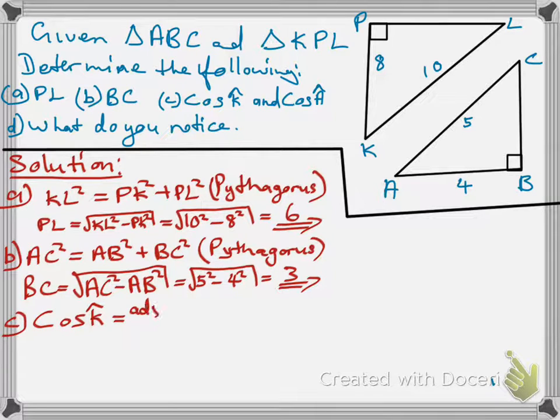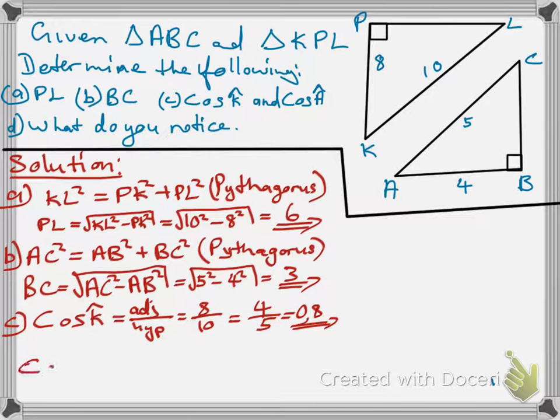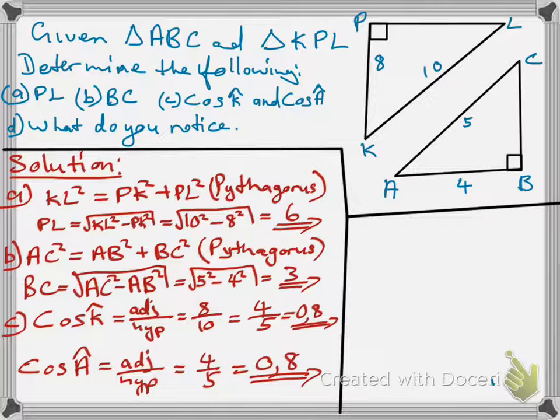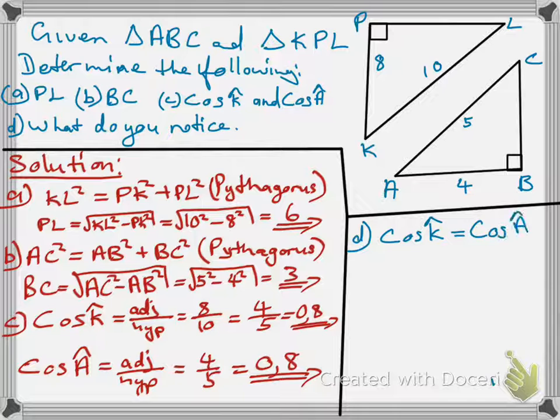And then, to find cos K, remember, cos is adjacent over hypotenuse. So, cos K, you can see it's going to be, using Sokatoa, we found the ratio, it's 0.8. And then, cos of A, using again the ratio, it's going to be 0.8. So, what do we notice? We notice that cos of K's ratio is equal to the ratio of cos of A.